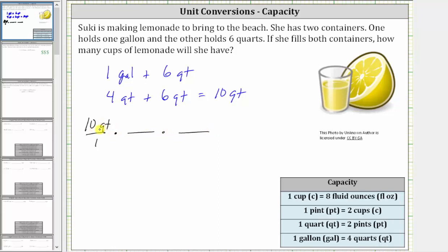Because we want quarts to simplify out, for this first unit fraction, we will have quarts in the denominator. And since we're converting quarts to pints, we will have pints in the numerator. And since one quart is equal to two pints, we have one quart in the denominator and two pints in the numerator. Since one quart equals two pints, this fraction is equal to one, but it will convert quarts to pints. Notice how the units of quarts here will simplify out.